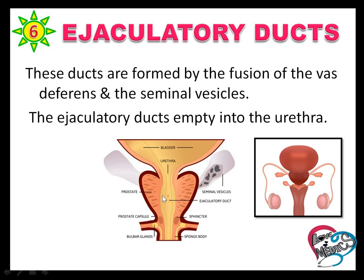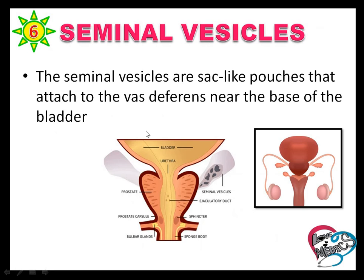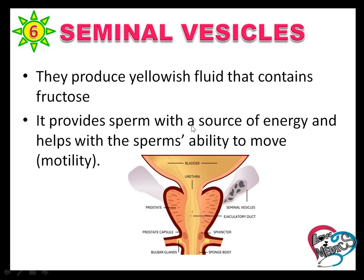The vas deferens and seminal vesicles join to form the ejaculatory duct. The secretions in the ejaculatory duct empty directly into the urethra. The accessory glands produce a nourishing fluid that maintains the sperm. The accessory glands are the seminal vesicles, prostate, and bulbourethral glands. The seminal vesicle is a sac-like pouch that attaches to the vas deferens near the base of the bladder.